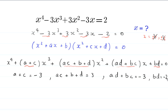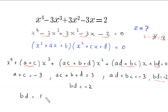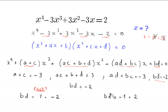From the equation bd = -2, we consider two cases. Case 1: b = 1 and d = -2. Case 2: b = -1 and d = 2.